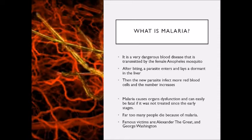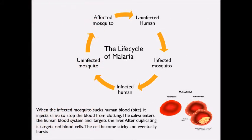Malaria causes organ dysfunction and can easily be fatal if not treated in the early stages. Far too many people die because of malaria. Famous victims include Alexander the Great and George Washington. When the infected mosquito sucks human blood, it injects saliva to stop the blood from clotting. The saliva enters the human blood system and targets the liver. After duplicating, it targets red blood cells.